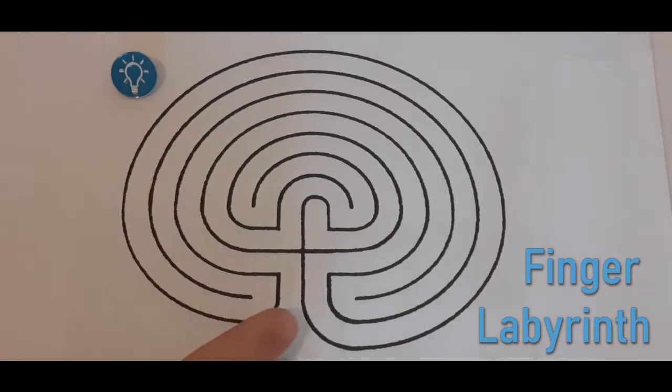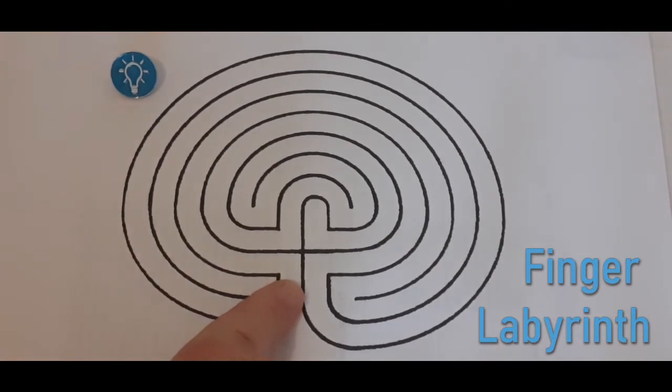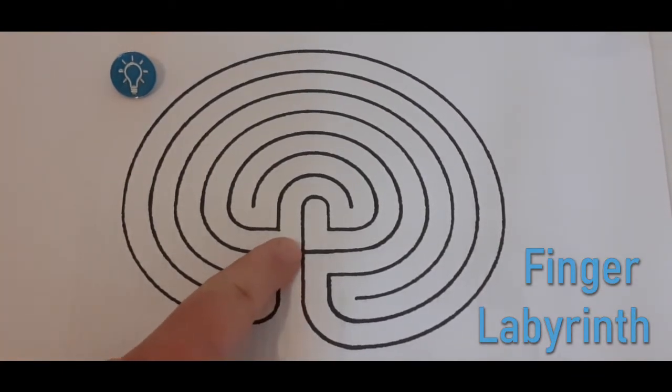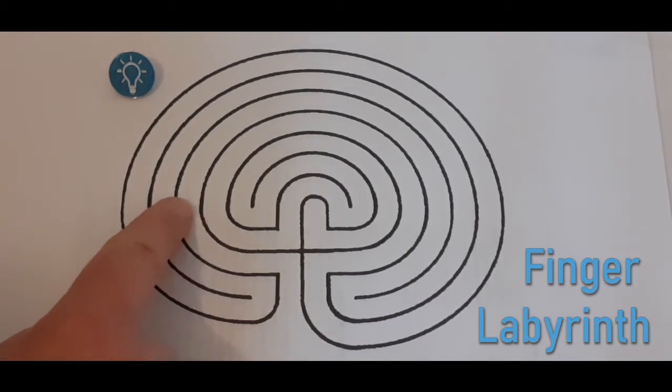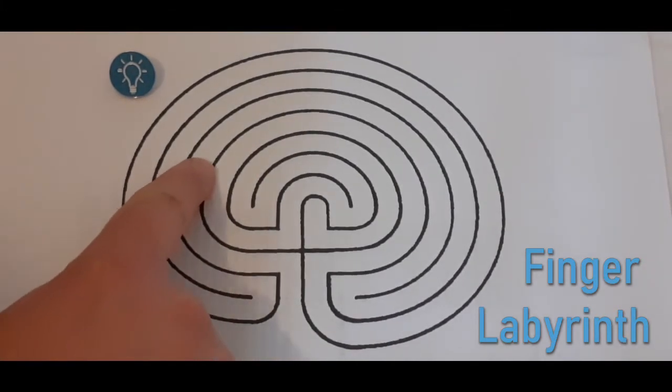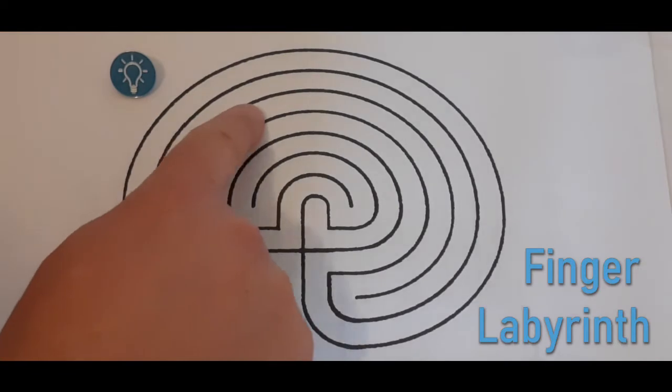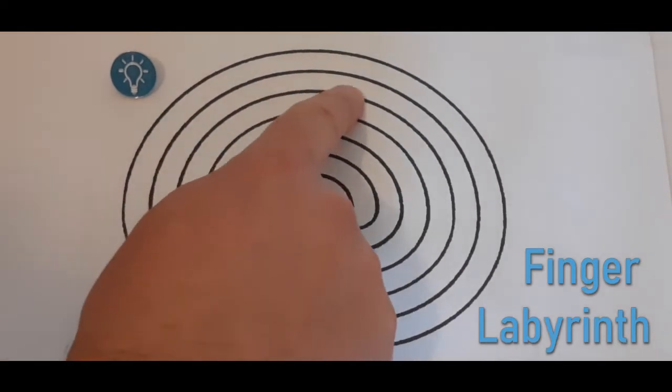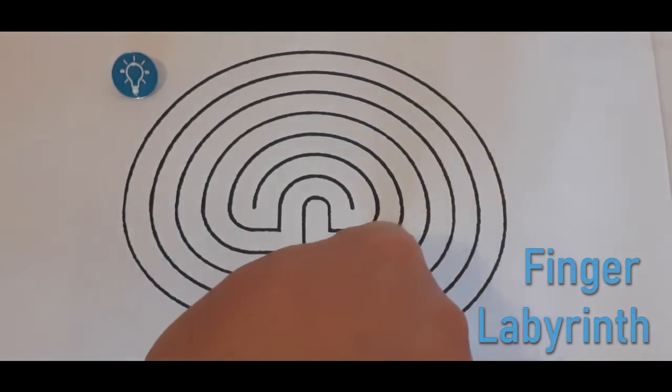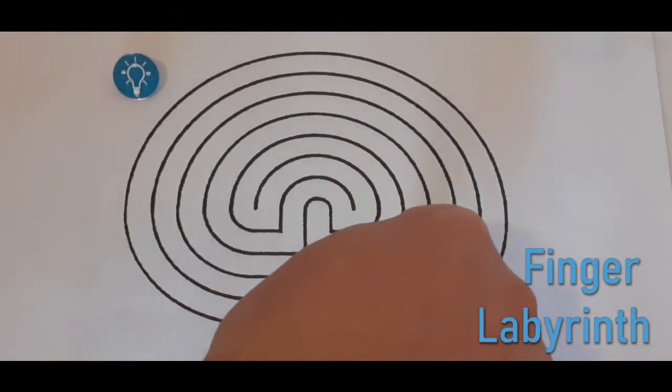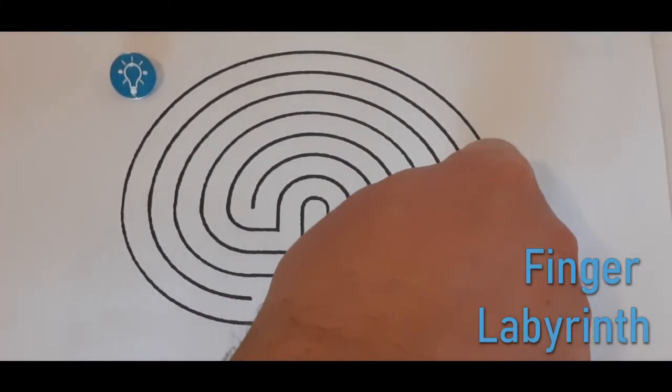Put your finger at the beginning of the labyrinth and slowly trace a path to the centre. As you do so, let your thoughts wander or think about those you love. Be thankful for the good things in your life.